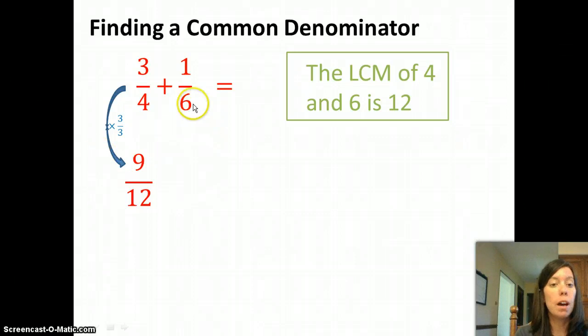Now I'll go to the other fraction and try to write it with a denominator of 12. So what do I have to multiply this fraction by to get a denominator of 12? I have to multiply 6 by 2, so I'll multiply the whole fraction by 2, and that gets me 2/12.